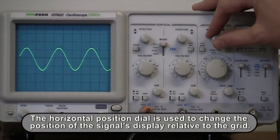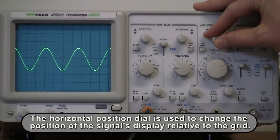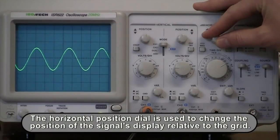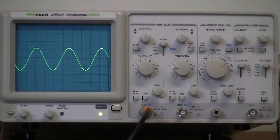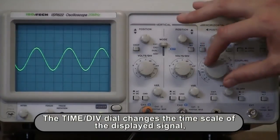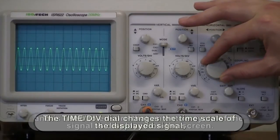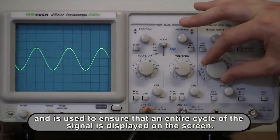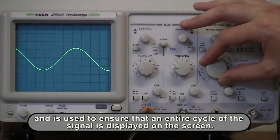The horizontal position dial is used to change the position of the signal's display relative to the grid. The time per division dial changes the time scale of the displayed signal, and is used to ensure that an entire cycle of the signal is displayed on the screen.